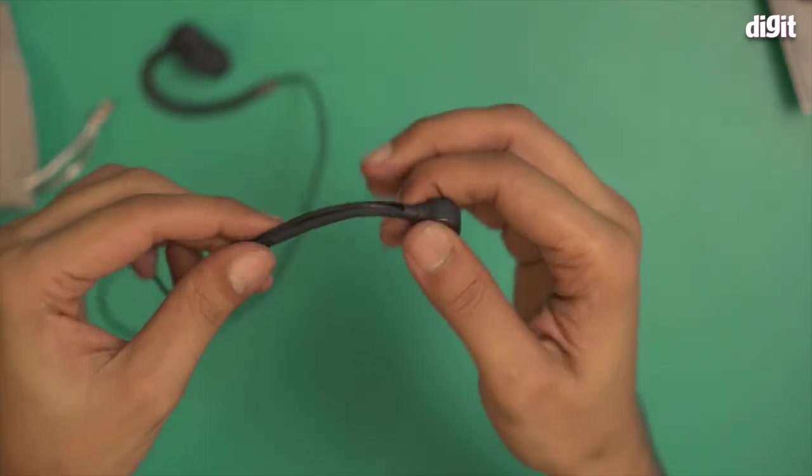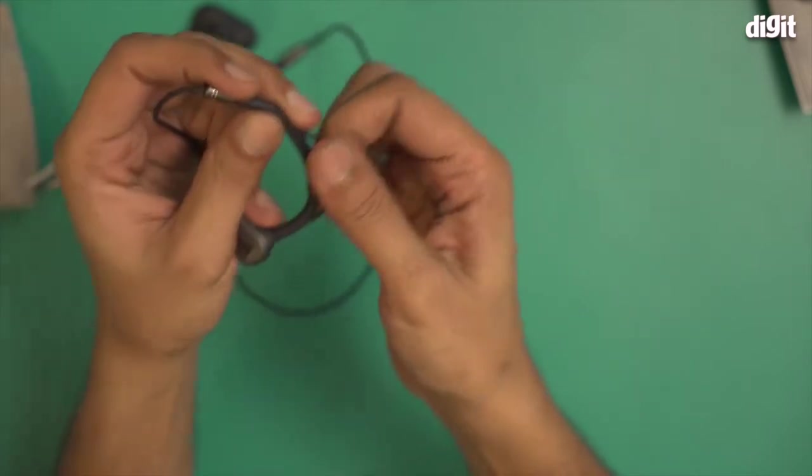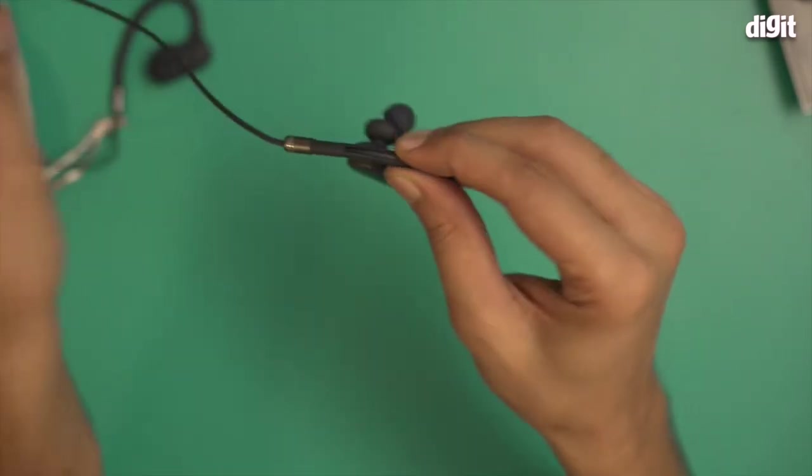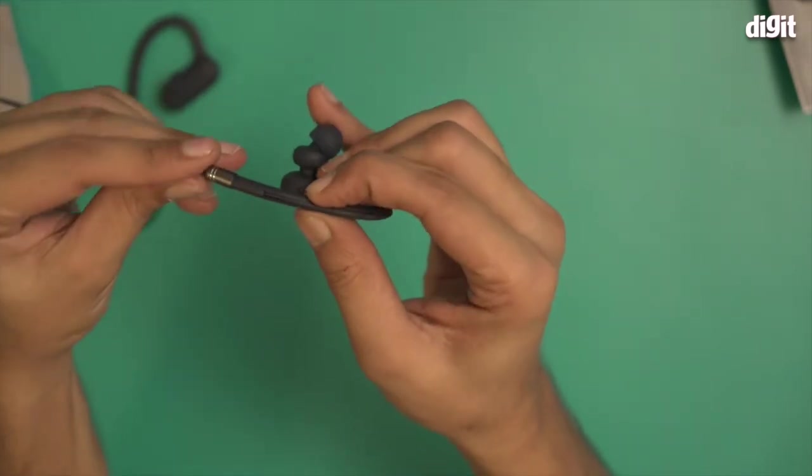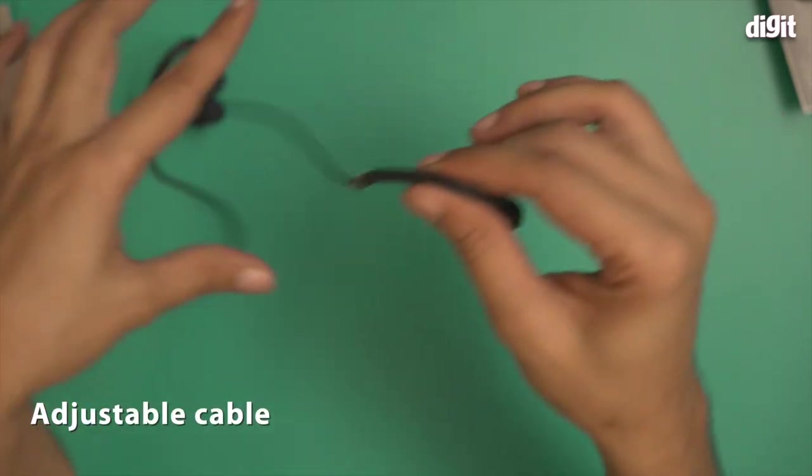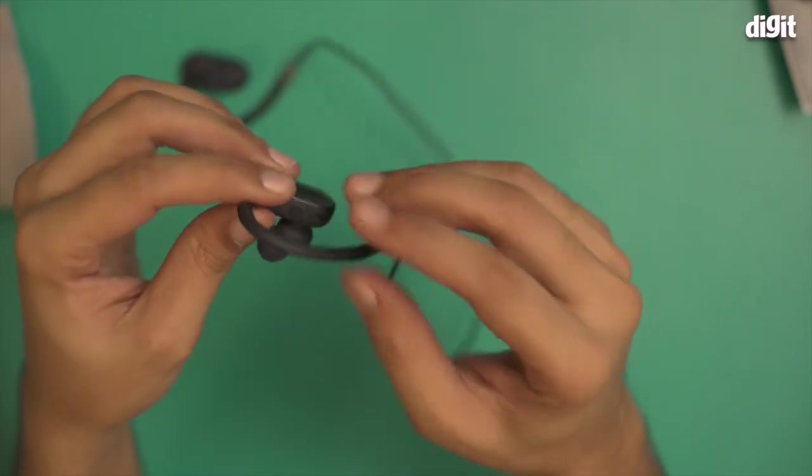The ear hooks are pretty flexible by the way. You can control the wire through this particular loop right over here. The wire runs through this hole, so you can push the wire like so and then pull to adjust the length of this particular neckband.